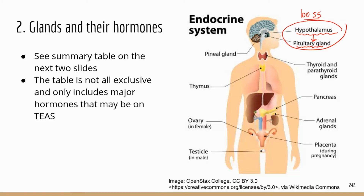There is another small gland also located in the brain — the pineal gland. It secretes melatonin, which regulates the sleep cycle. That's why there are supplements on the market to help you sleep better, and those supplements usually contain melatonin.